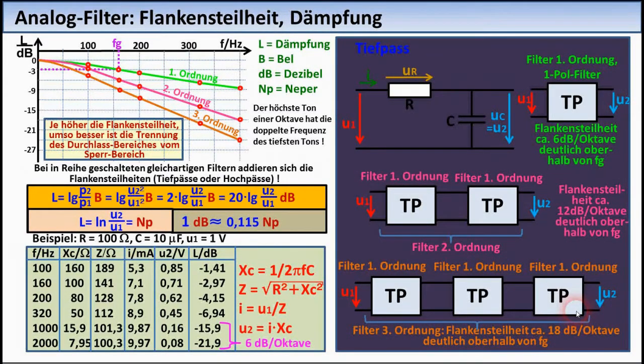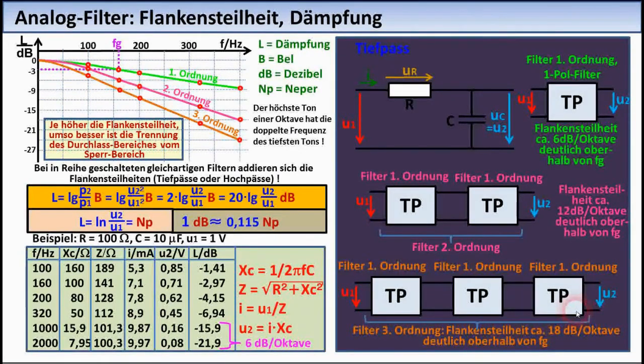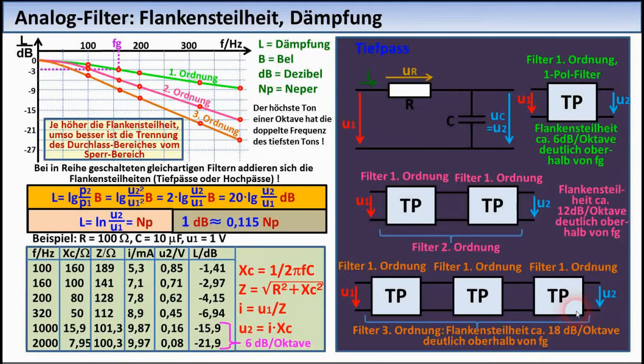Since P2 and P1 or U2 and U1 each have the same unit, Bel or decibel is not a unit in the usual sense that results from other units. Attenuation and amplification are actually dimensionless quantities. The artificially assigned unit Bel or decibel only points to the meaning of a numerical value.